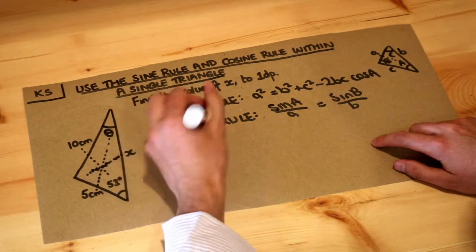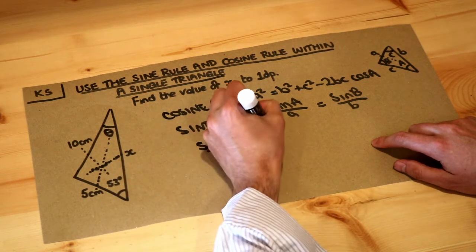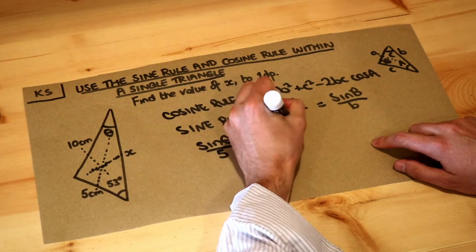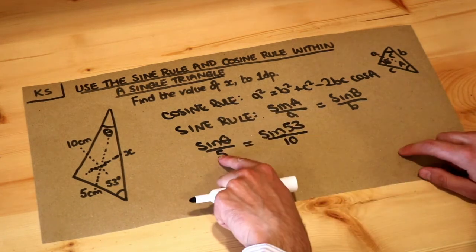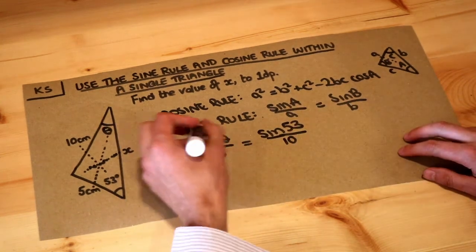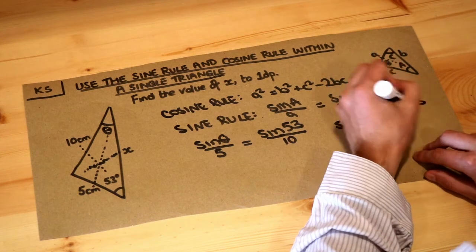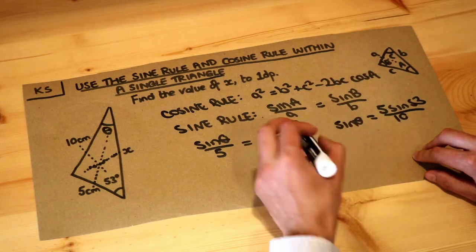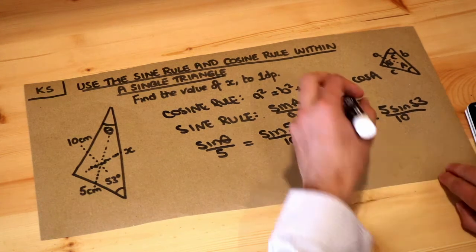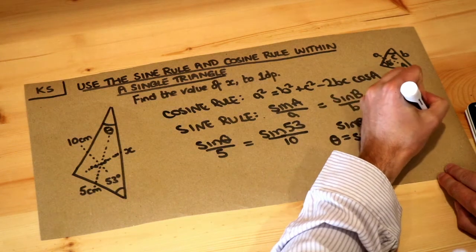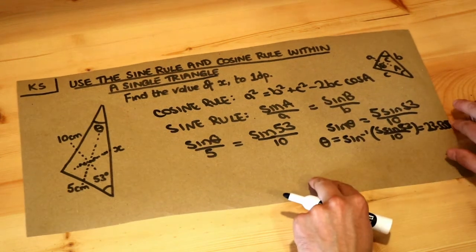If we do sine of theta divided by its opposite length, which is 5, that equals sine of the other angle, which is 53, divided by its opposite length, which is 10. The only unknown here is theta. We multiply both sides by 5 to get sine of theta equals 5 sin 53 over 10. Then do inverse sine of that to get 23.5355. I'm not going to round too much because I don't want any rounding errors. Don't round until the very end.